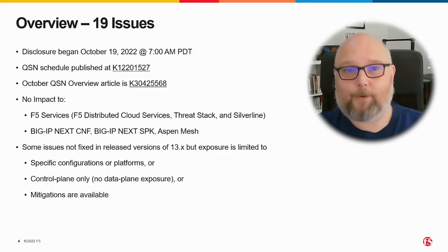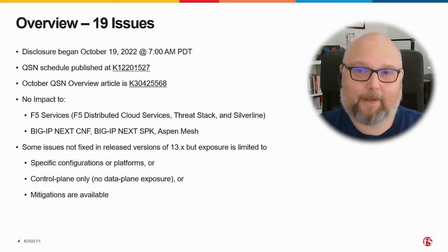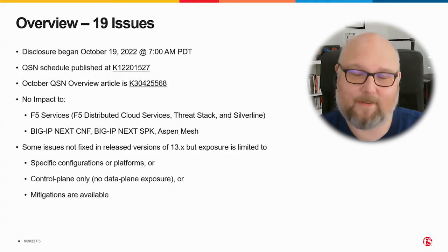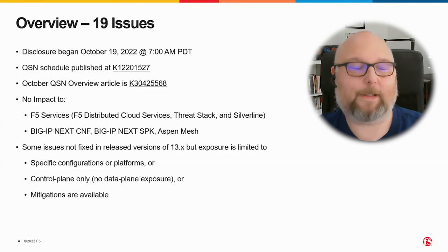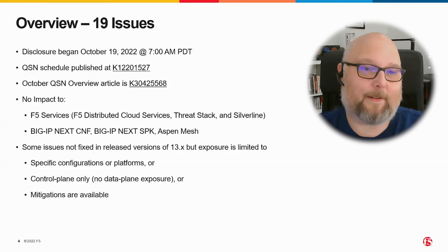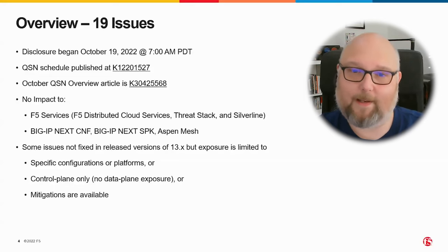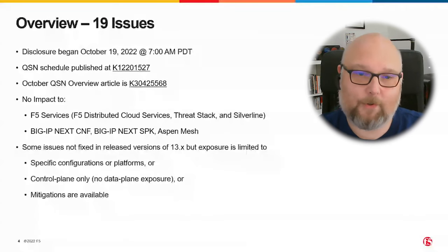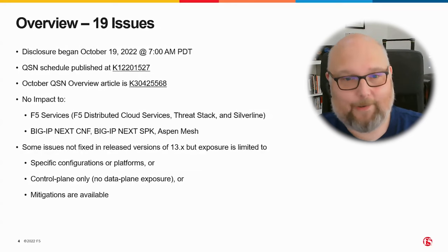There is an overview article for this QSN, as there is for every QSN. That will give you a rundown of everything that's included — all of the vulnerabilities we've disclosed, security exposures and so on — so you can easily find impacted versions, the mitigations and so on. There is no impact from anything we have disclosed to any of the F5 services like distributed cloud, ThreatStack, Silverline, nor is there any impact to BigIP Next, CNF, SPK or Aspen Mesh.